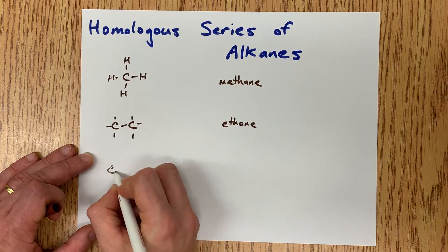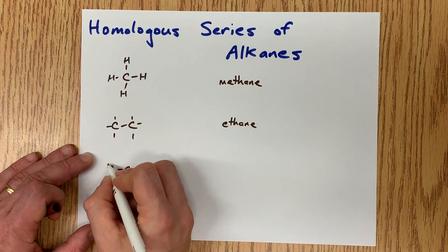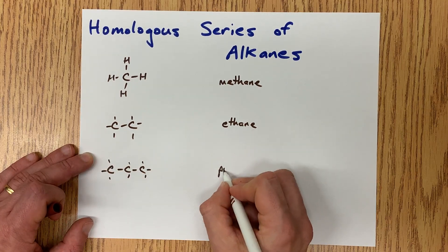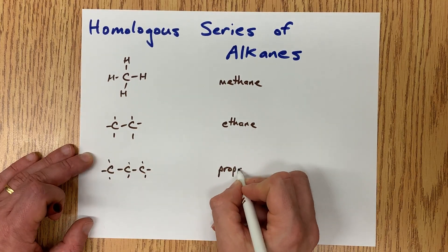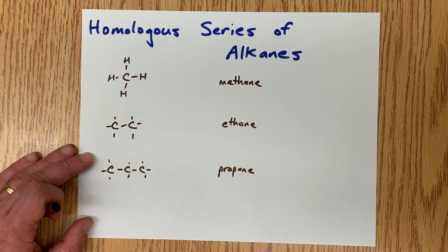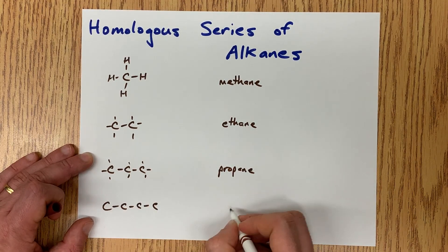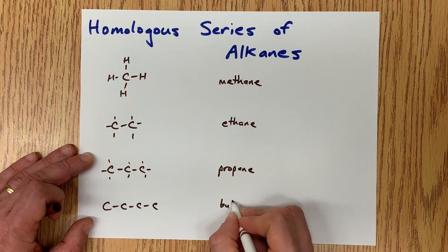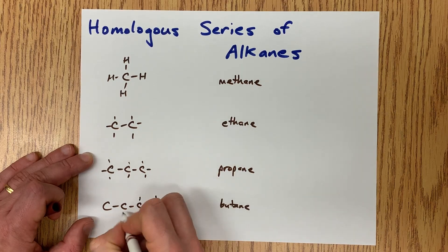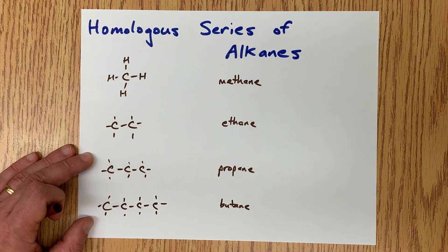Add another carbon to the chain — that makes three. You can add your hydrogens in, but this is propane, a three-carbon chain. A four-carbon chain is called butane, which has ten hydrogens.